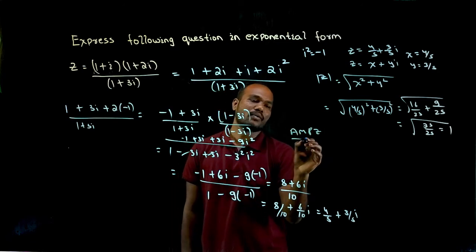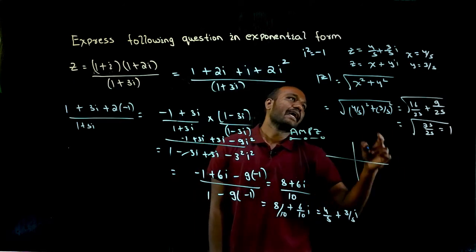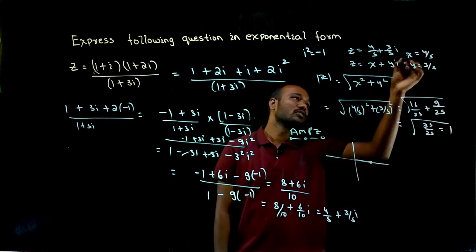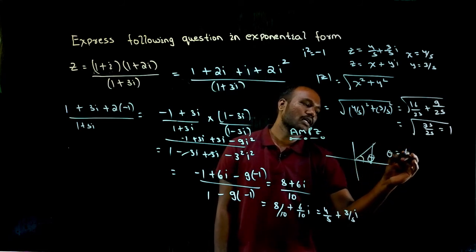Next we have to find amp of z. What is this? Amplitude of z. How to find amplitude of z? X is positive, Y is also positive, should be in first quadrant. In first quadrant theta is what? Alpha.